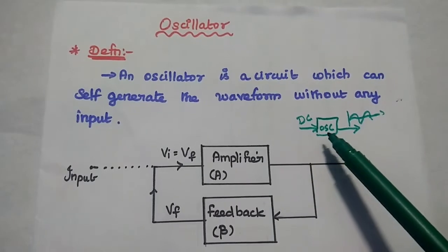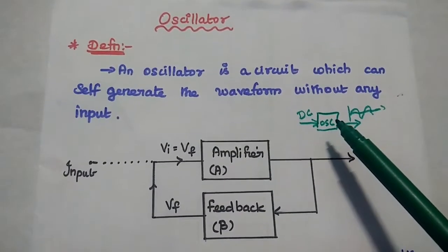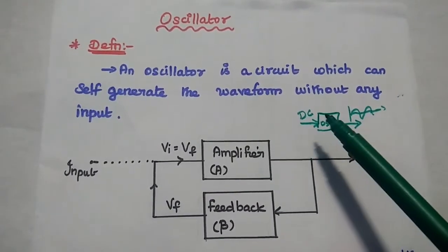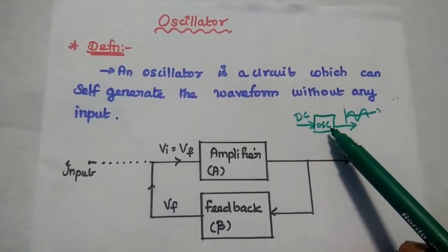So in this oscillator, we are using transistor as an electronic device. For that transistor, we can give DC supply voltage. This is not that input voltage. So without any input signal...